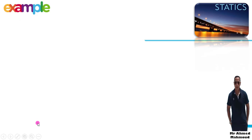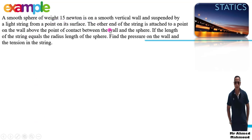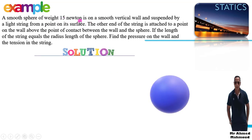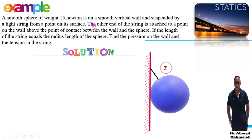New example: A smooth sphere of weight 50 Newton rests on a smooth vertical wall and is suspended by a light string from a point on its surface, with the other end attached to a point on the wall above the point of contact. The length of the string equals the radius length. The weight acts downward equal to 50 Newton, and the reaction is horizontal since it is a smooth wall.